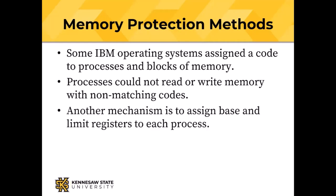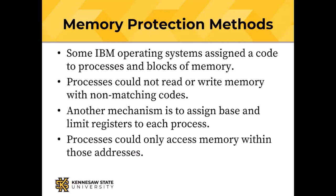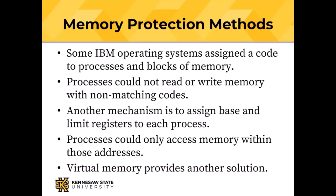These days you'd need a bigger code — there are hundreds of processes running in Windows 10 or 11. Another mechanism is to assign two registers: a base register, which is the lowest memory address that an application has allocated to it, and a limit register, which is the highest memory address. We've got two registers that mark off a block of memory, and processes can only access memory between those two addresses.